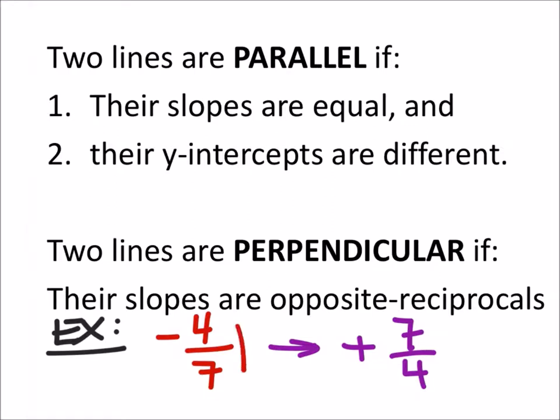So this red slope would be the slope of one equation, and this purple one would be the slope of the other equation if we wanted perpendicular lines, which means that the two lines would intersect at a 90-degree angle.